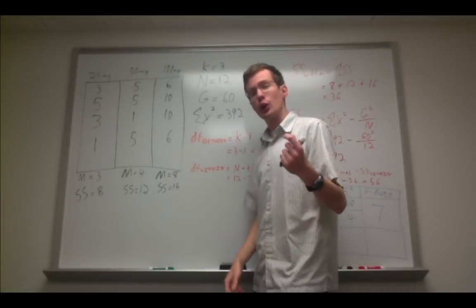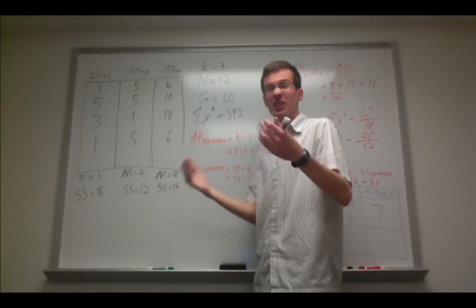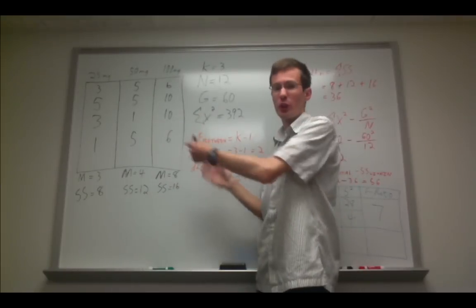Remember, a one-way ANOVA does not tell us which of the groups are different, just that at least one of them is different from all the other ones.